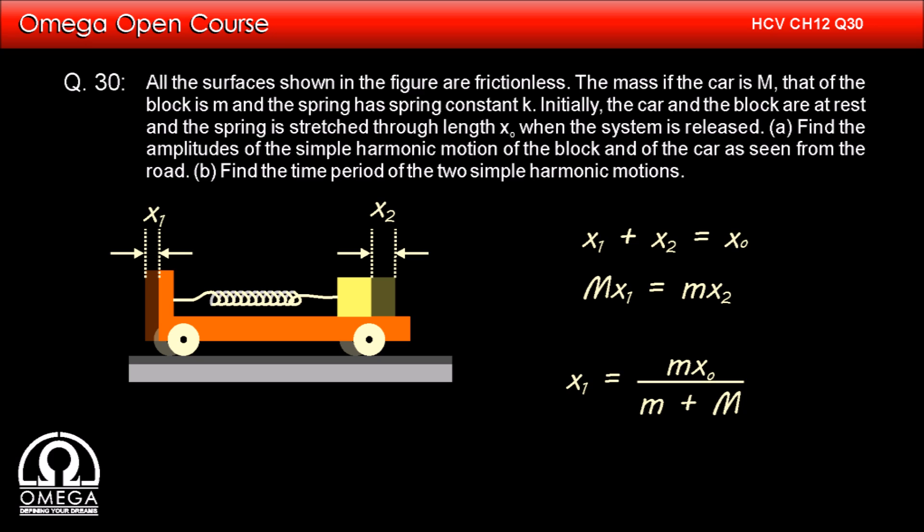Solving these two equations, we get X1 is equal to small m into X knot divided by small m plus capital M, and X2 is equal to capital M into X knot divided by small m plus capital M. This is the answer to the first part of the question.